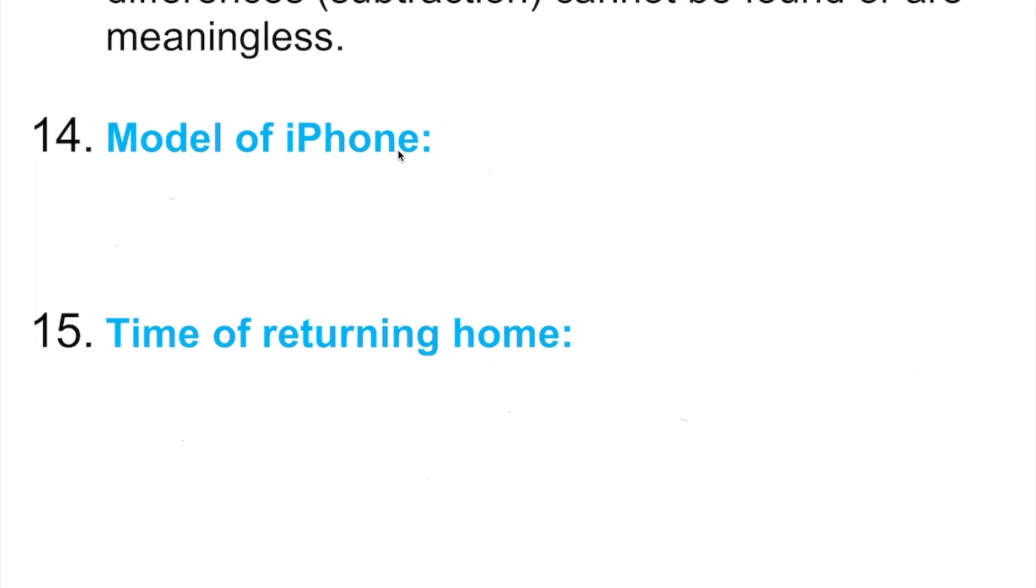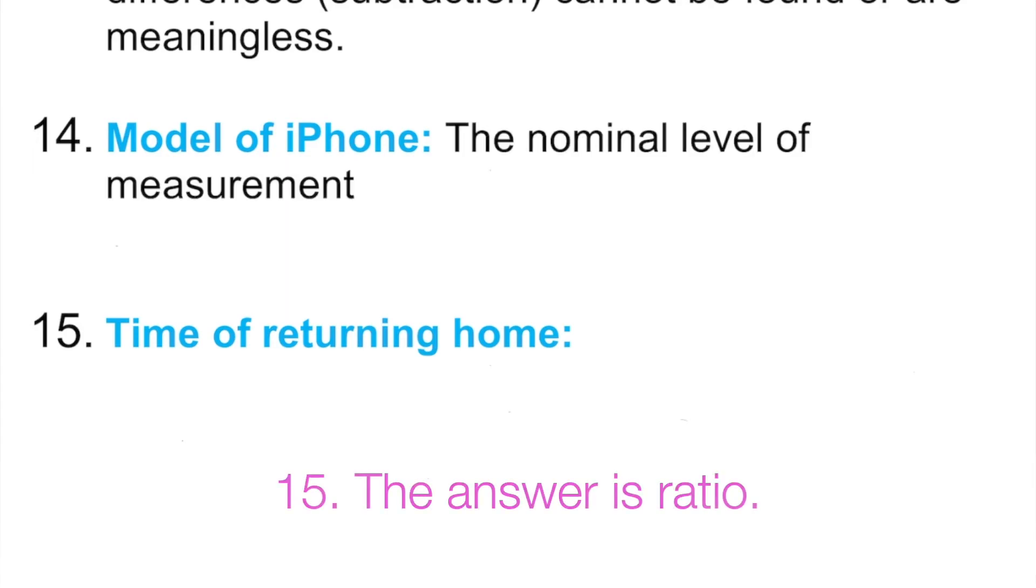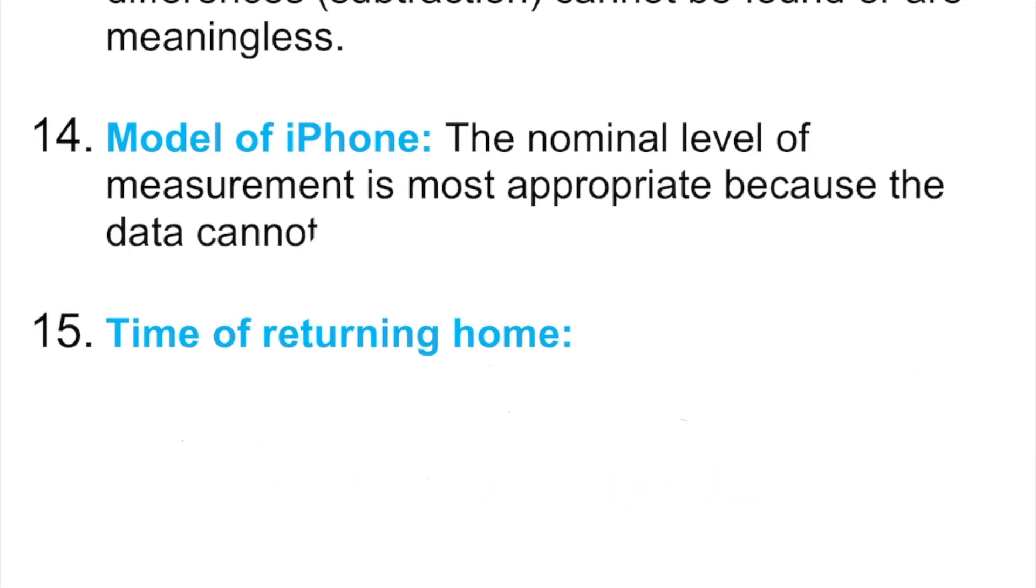So model of iPhone - you have iPhone 12, 12 Pro, 12 Pro Max, and so on. Each year, basically, they're trying to come up with a new model. So this is just a name of iPhone model. So we can actually easily say this is a nominal level of data. And of course, this is most appropriate because data cannot be ordered. That's nominal - you cannot order it.